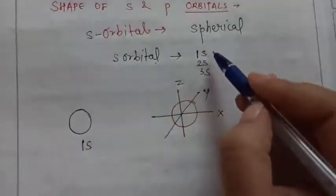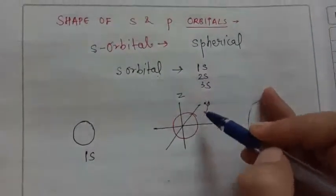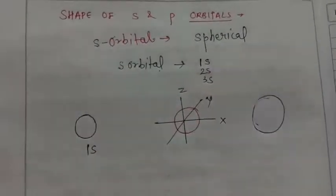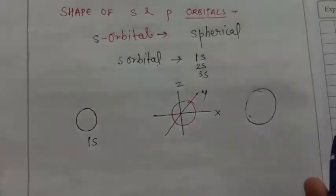Toh jitne bhi S orbitals hai chahi woh 1s ho, 2s ho, 3s ho, 4s ho till whatever you want, sabhi spherical shape ke honge. But size of sphere will be increasing.